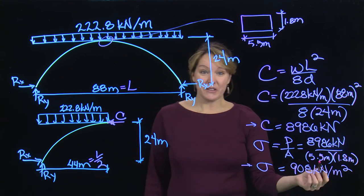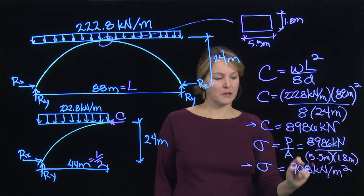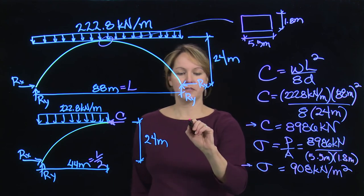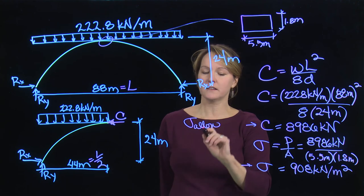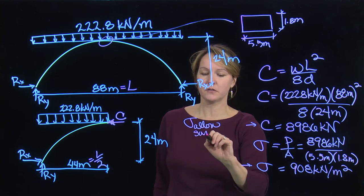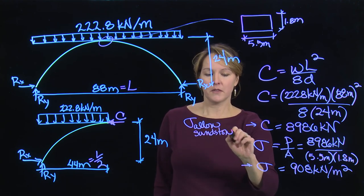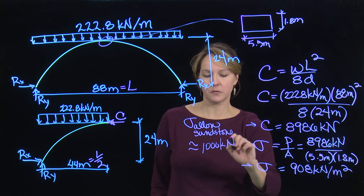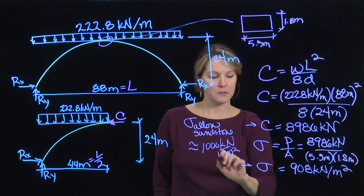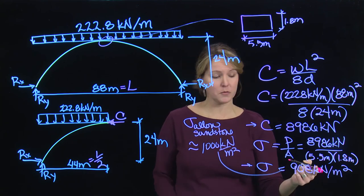There's another number. What do I use to compare with that? What I would do here is I would look up or figure out what the allowable stress for the stone that I'm using. In this case, the Landscape Arch is made out of sandstone. That allowable value is approximately equal to 1,000 kilonewtons per meter squared. Comparing these two, the Landscape Arch looks like it's okay in compression.